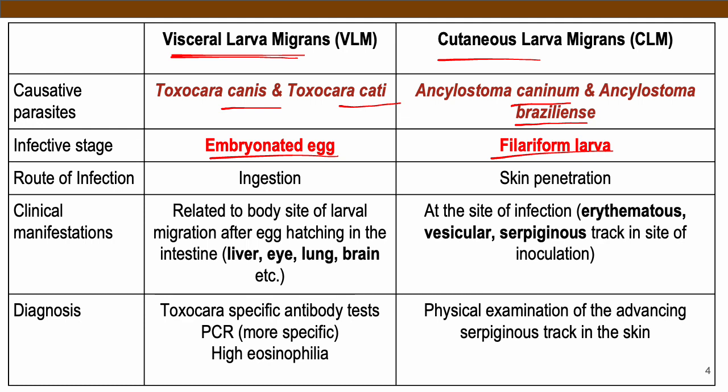Just like we have discussed in nematodes, when the infective stage is an egg form, the route of infection is usually through ingestion, as seen with visceral larva migrans. While for cutaneous larva migrans, since the infective stage is the larval stage, the route of infection is through skin penetration.